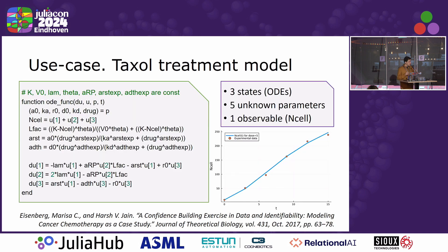I'll illustrate the methods we implement right now using an example proposed by Maurice Eisenberg to study profile likelihood. It's a small taxol treatment model — a chemotherapy drug — but that's not really important for us now because we are not focused on biological science here, but on the methods. We'll study one of the parameters of this model, which is the sensitivity of proliferating cells to this drug.